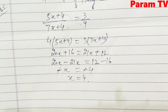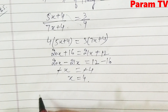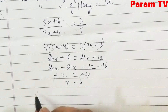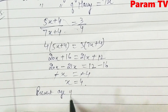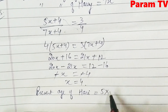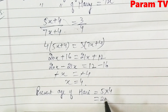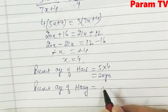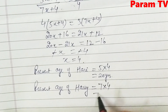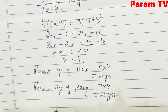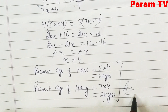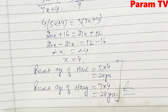Now we have the value of x = 4. Present age of Hari = 5x = 5 × 4 = 20 years. Present age of Harry = 7x = 7 × 4 = 28 years. This is the final answer for question number 6.